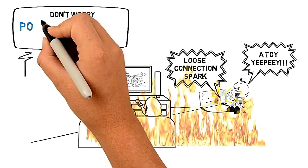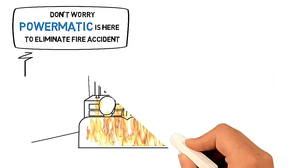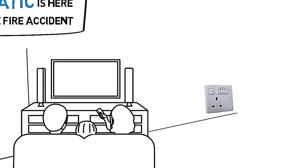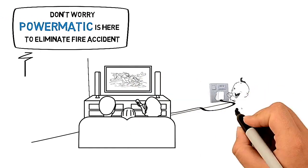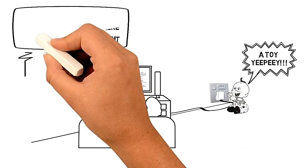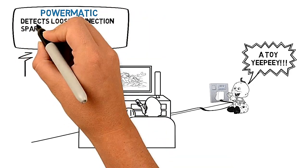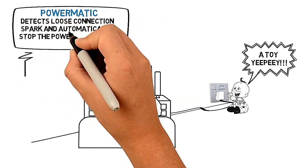Don't worry, Powermatic is here to eliminate fire accidents. Powermatic detects loose connection spark and automatically stops the power from reaching the equipment.